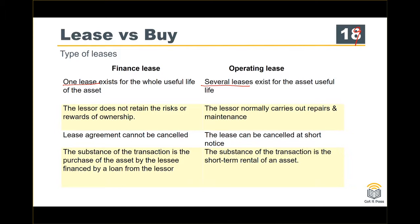Under a finance lease, the lessee does not retain the risk and rewards of ownership. Under an operating lease, the lessor takes care of repairs and maintenance. The lease agreement cannot be cancelled under a finance lease, but under an operating lease, you may cancel it with short notice. The substance of a finance lease is the purchase of the asset financed by a loan from the lessor, whereas the substance of an operating lease is a short-term rental of the asset.